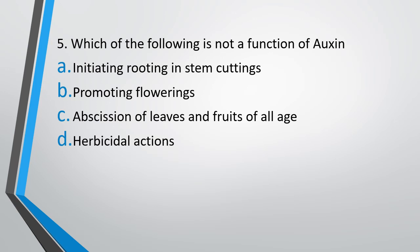Question 5: Which of the following is not a function of auxin? Option A: initiating rooting in stem cuttings, Option B: promoting flowering, Option C: abscission of leaves and fruits of all ages, or Option D: herbicidal action. The correct answer is Option C. Abscission of leaves and fruits of all ages is not a function of auxin — though abscission of leaves and fruits of old age is a function of auxin, it prevents abscission of younger fruits and leaves. So the statement 'all ages' is incorrect; it should be 'old ages.'